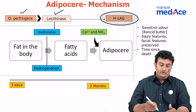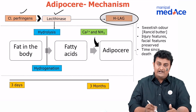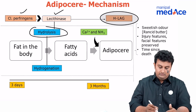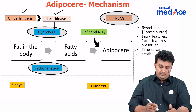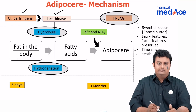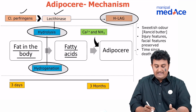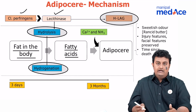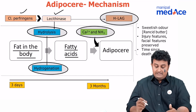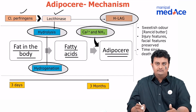What is this lecithinase doing actually here? Well, it's causing hydrolysis and hydrogenation of the fat in the body. And as this fat slowly gets hydrogenated to become fatty acids, salt and ammonia get added to make insoluble salts, and that is what forms adipose ear.